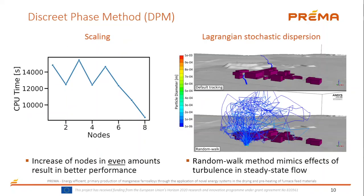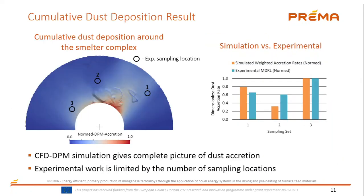Next, we can go on to simulating the dust using the discrete phase method. Initial scaling tests revealed that only increasing the nodes in an even amount results in better performance. On the right, a comparison is shown by releasing particles that are just following the streamline and using a random walk method to mimic the effects of turbulence in a steady state flow field.